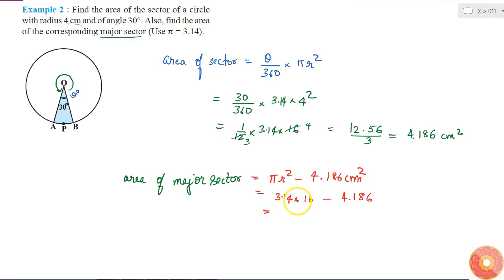3.14 into 16 will be 50.24 minus 4.186. This comes out as 46.054 centimeter squared. So this is my final answer.